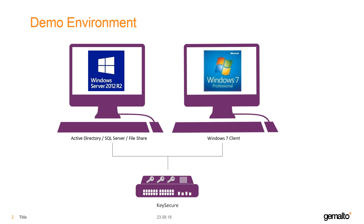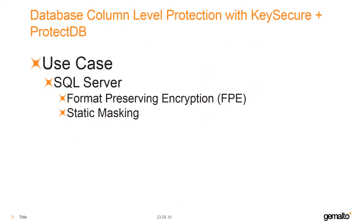Also running is a third virtual server — the KeySecure Virtual Appliance — accessed via the HTTPS graphical interface. The use case being demonstrated is securing individual columns of a table in an SQL Server database using a mix of standard encryption and format-preserving encryption, and showing how we can specify alternatives for what the user sees.